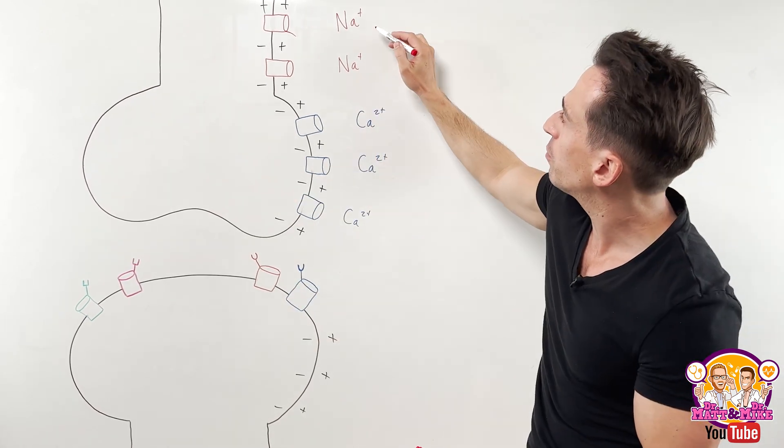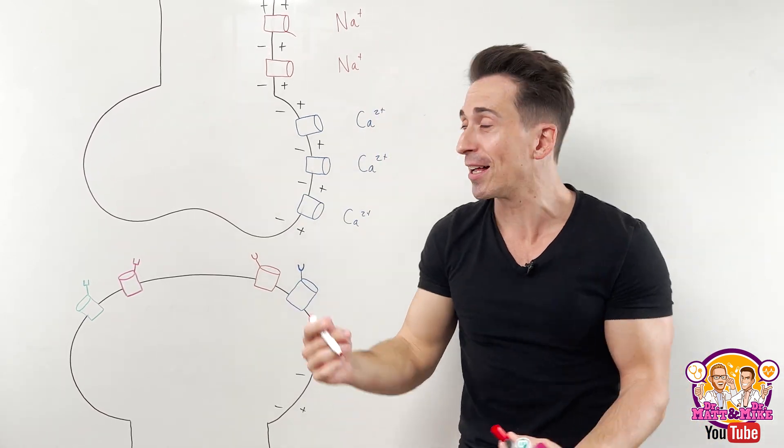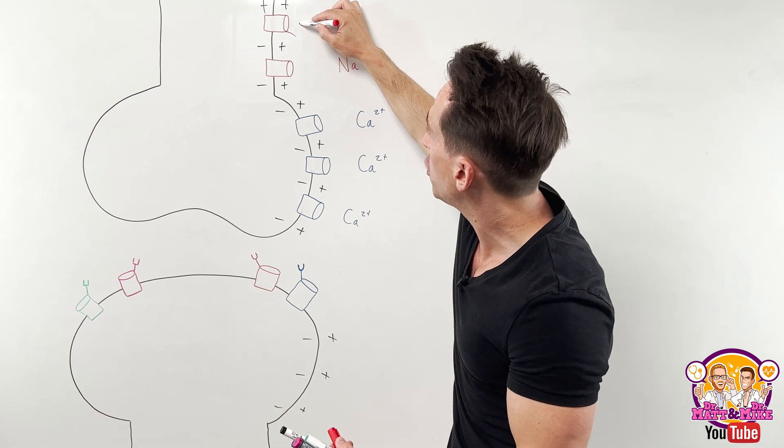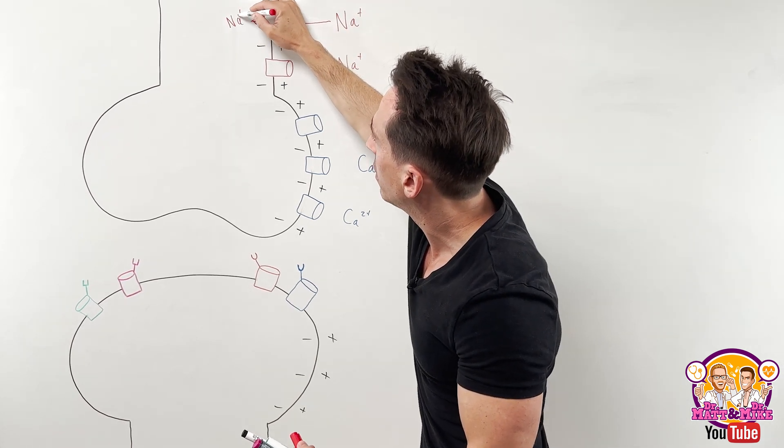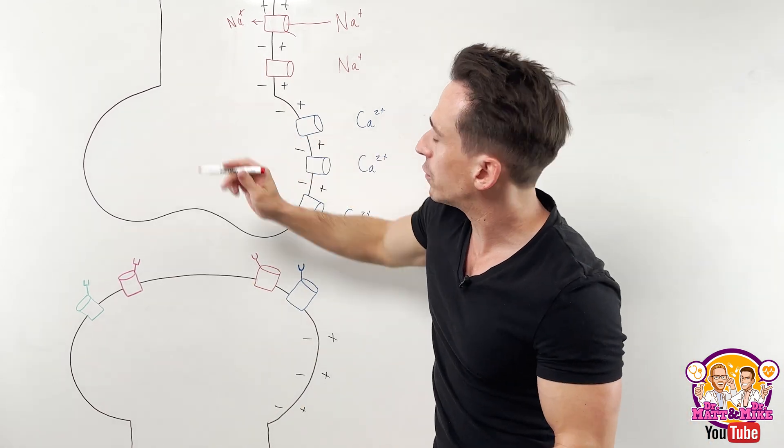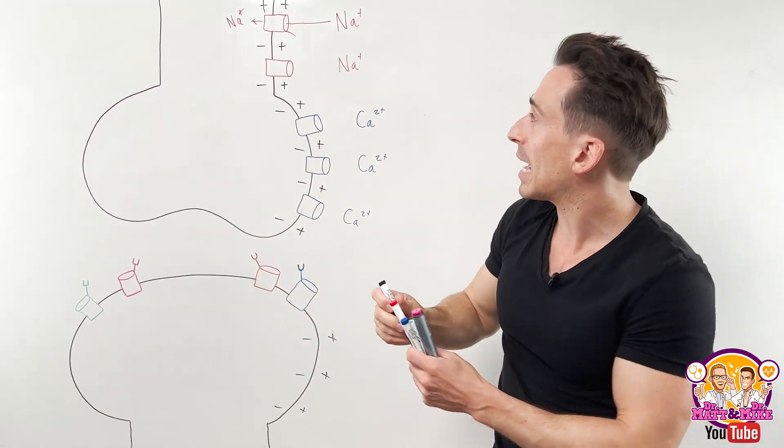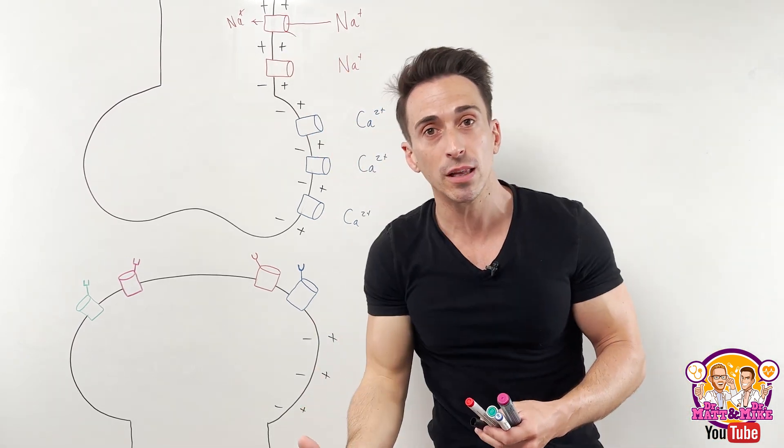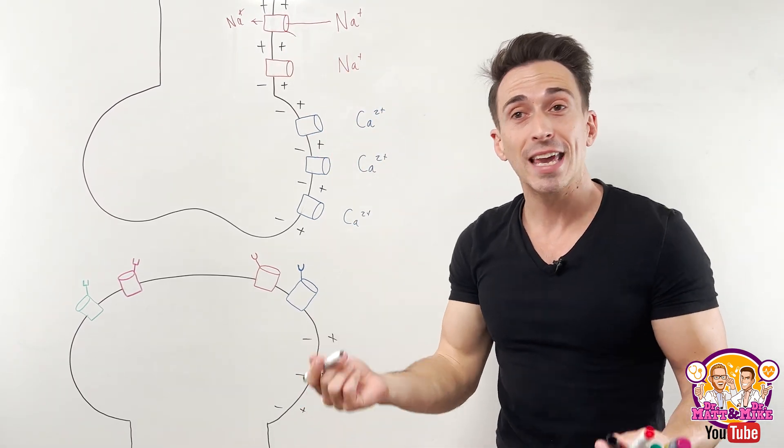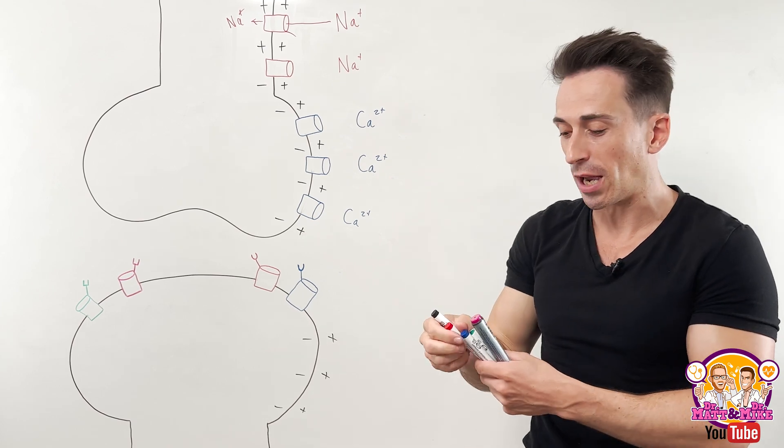And we all know that sodium predominantly sits outside the cell. And so this sodium diffuses down its concentration gradient to go inside the neuron, taking that positive charge with it, making this area of the neuron slightly positive, hitting negative 55 millivolts, which is the key to open up the next voltage gated sodium channel.